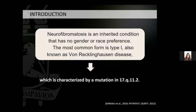Neurofibromatosis is an inherited condition that has no gender or race preference. The most common form is type 1, also known as von Recklinghausen disease, which is characterized by a mutation in chromosome 17q11.2.